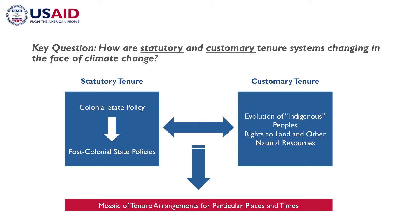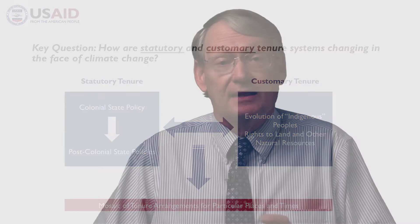The key question today is how are statutory tenure systems changing and how are customary tenure systems changing? From previous readings and discussions in this course, you have all discussed how colonial state policy around statutory tenure systems has evolved over time through the present. Similarly, customary tenure systems change — there has been an evolution of indigenous people's rights to natural resources. Customary systems are not static; they change, they evolve. There's an interface between these two tenure systems that leads to what I call a mosaic of tenure arrangements for particular places at particular times. It's this complex interface between customary and statutory that we're looking at today, and how climate change is changing these mosaics very rapidly.